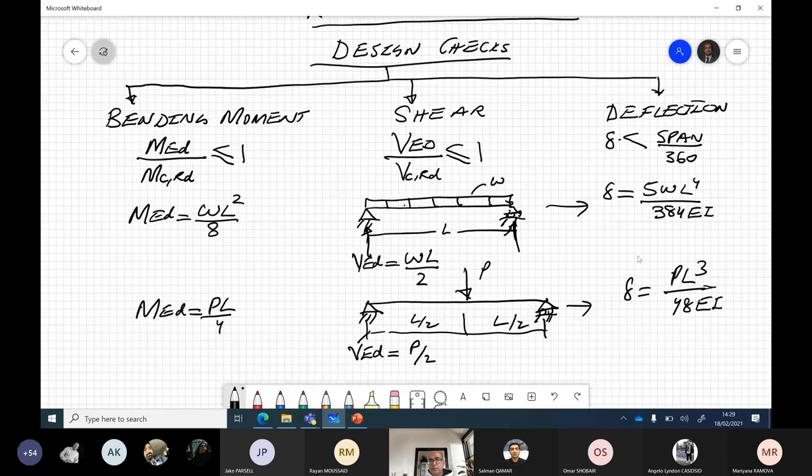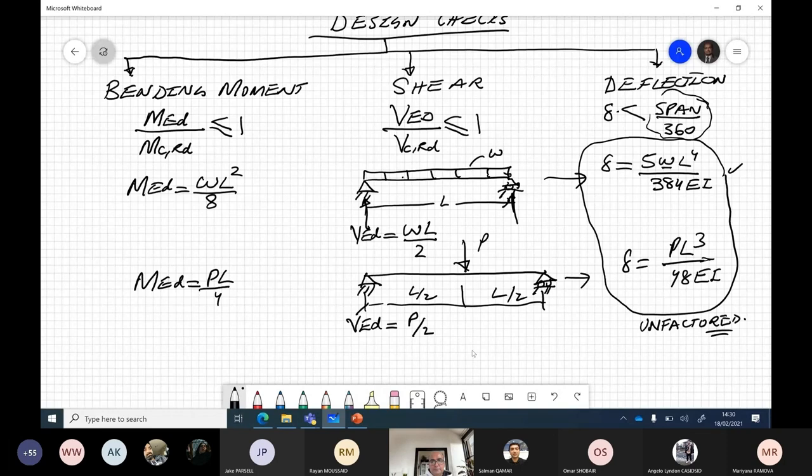This is what we know about applied loading. Now we know what is applied. W and P are design loads. So 1.35 times permanent plus 1.5 times variable load. So they are design loads, which means we will apply factors. And here in serviceability, deflections, loads are unfactored.